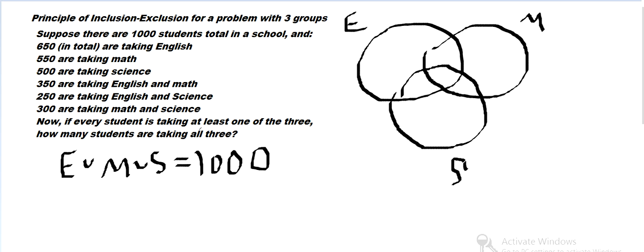So here we can use a similar principle of inclusion and exclusion, but for three groups. So it's going to look like this. The union, the number in the union is the number in each of them, but that's going to be overcounting. So for example, if we take E and M and add them both, that's going to double add the area in the intersection.